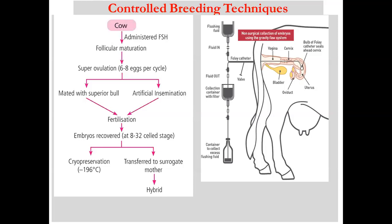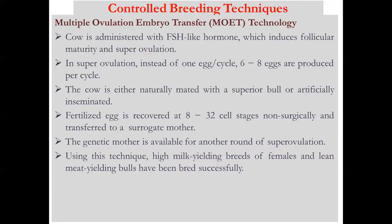So MOET has two halves: the first is administering hormones to the cow to obtain more ovules per ovulation — called multiple ovulation or super ovulation. The second is collecting all fertilized eggs or embryos after fertilization and transferring them to surrogate mothers for further development, or storing them by cryopreservation. Once the recovery of fertilized eggs is over, the genetic mother is again ready for the next round of super ovulation.